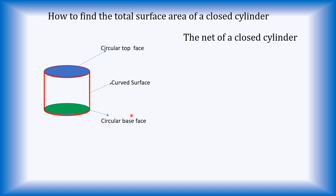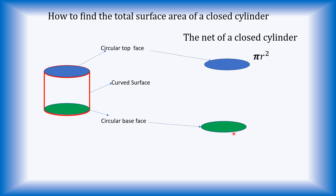Now let's look at the net. The top surface is circular, and the formula for the area of a circle is pi r squared. The lower circular base surface is also a circle, and its area is also pi r squared.